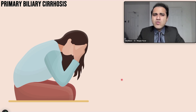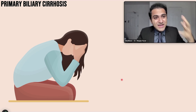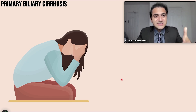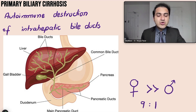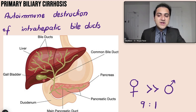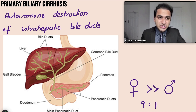This is a classical scenario of primary biliary cirrhosis. To understand PBC, you need to understand that bile is produced in the liver and transported via bile ducts to the gallbladder, where it is stored and periodically released into the intestines to help in digestion of food.